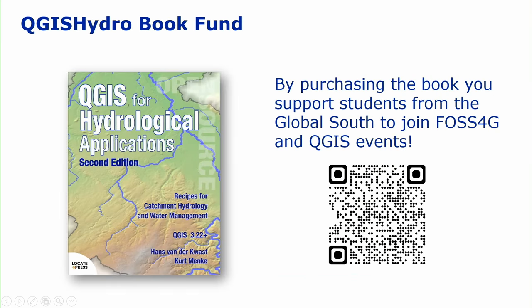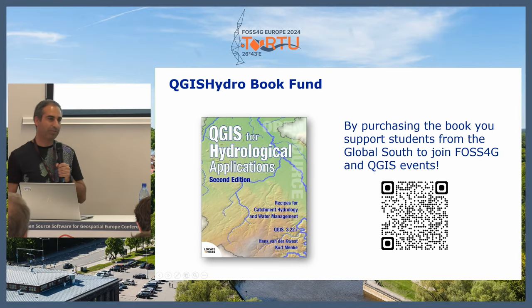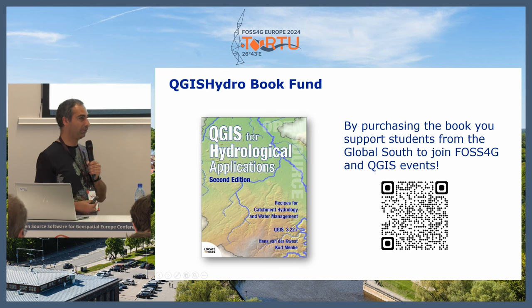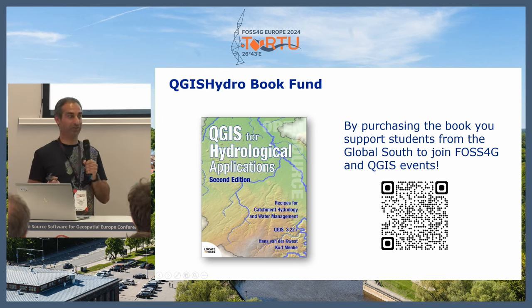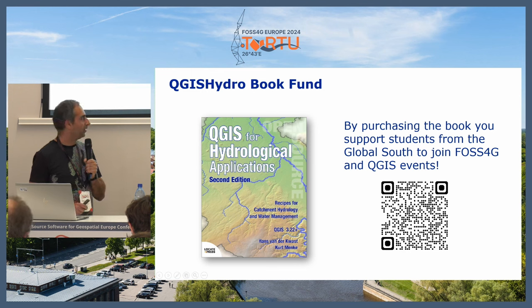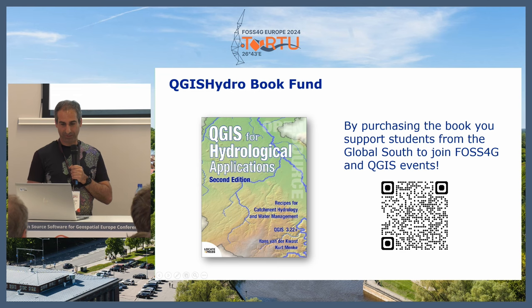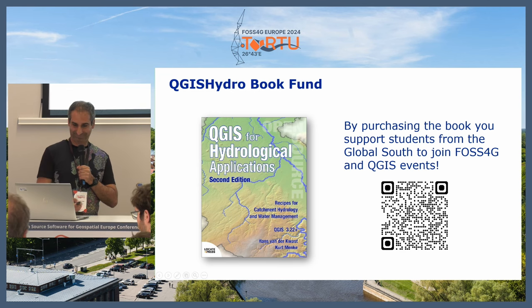If you want to know more, Kurt and I have written the book QGIS for Hydrological Applications. The first edition uses Saga; the second edition uses PCRaster — recommend the second edition. By purchasing the book, you support students from the global south to join FOSS4G and QGIS events. Unfortunately, the student I was supporting for this event is still waiting for their visa. For the QGIS User Conference, we have a student from IHG Delft from Sudan — Razan El Noor — who will join, so I hope you'll meet her there. And that was my presentation.